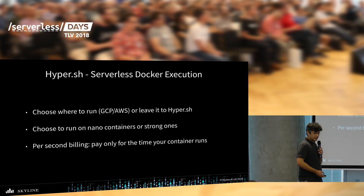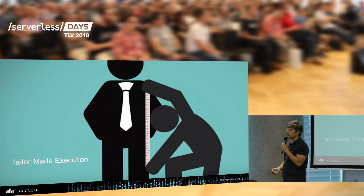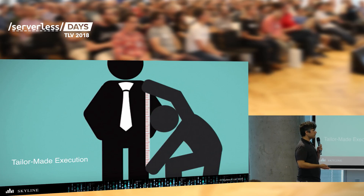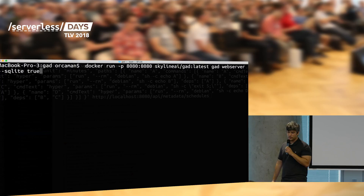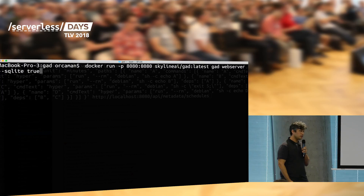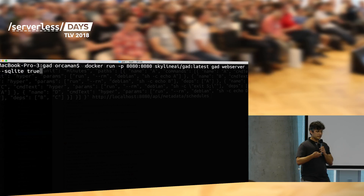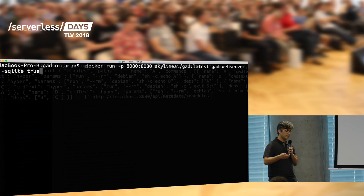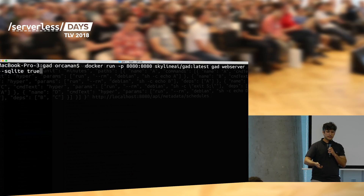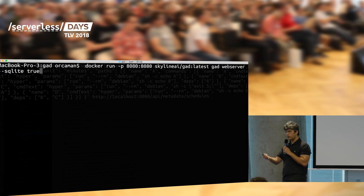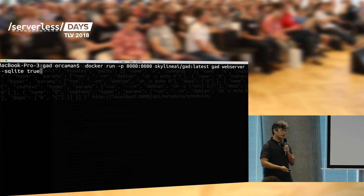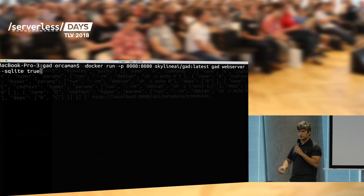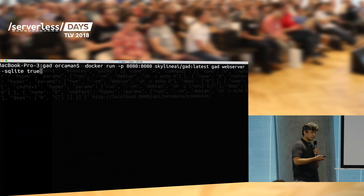So long story short, it's basically a tailor-made way of executing each and every node in the graph — every node gets exactly the resources it needs and you only pay for the time it runs. Now let's check out an example of using the actual GAD server with the serverless Hyper setup. We're going to have two key differences from the previous simple example: first, it's going to run serverlessly — the GAD server will run with Docker but the commands are going to run with Hyper. The second difference is that we're going to have node C fail explicitly — instead of echoing C, we'll return a non-zero status code from the container, just to illustrate the notion of DAG.